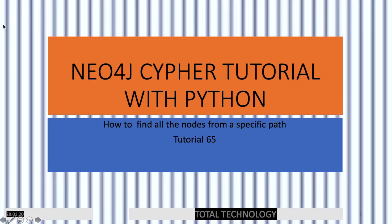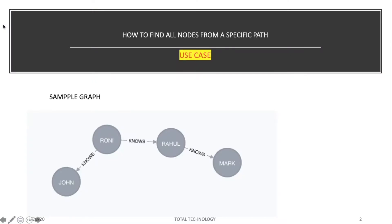What's up guys, this is Ronnie, welcome back to our channel Total Technology. This is tutorial 65 and today's topic will be how to find all nodes from a specific path. A path is kind of starting from a node and ending with another node, and in between there could be multiple relationships. When you have this sort of structure or pattern, you can see the whole thing as a path. I'm going to take this graph as an example.